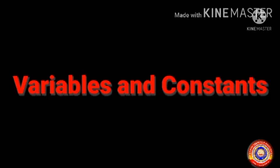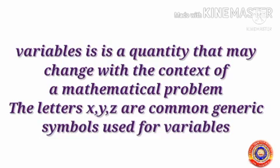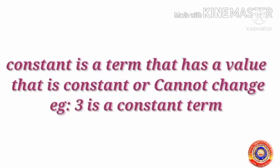Next, Variables and constants. Variable is a quantity that may change with the context of a mathematical problem. The letters x, y, z are common generic symbols used for variables. Variables are varying quantity most commonly represented by letters.